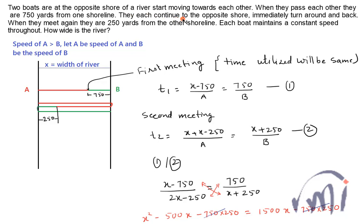They each continue to the opposite shore, immediately turn around and back. So this is the second drawing where they first met here and A continues in this direction and B continues in this direction. A reaches the shore and then immediately turns around.